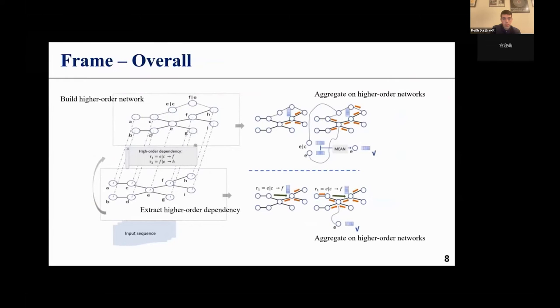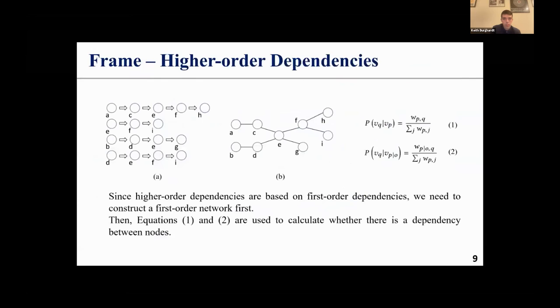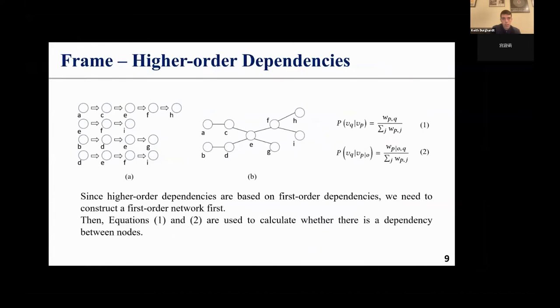This is our framework with four parts. In the first part, we extract the higher-order dependency in sequential data. Only when the predecessor significantly affects the successor, both the predecessor and the successor form a higher-order dependency. We use the conditional probability of node appearance as an evaluation. Under recognition that node vp appears at time t, the probability of node vq at time t plus 1 is defined as Formula 1. Furthermore, considering the situation where node vp appears at time t minus 1, the probability is defined as Formula 2.